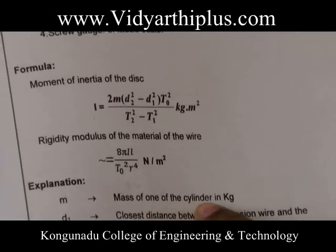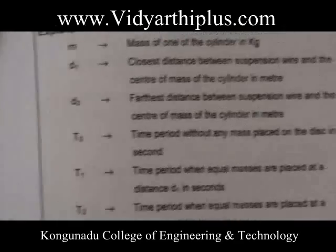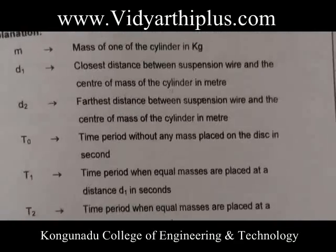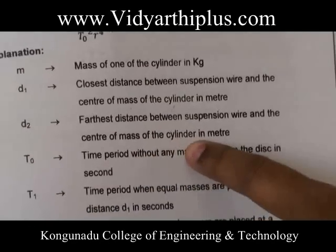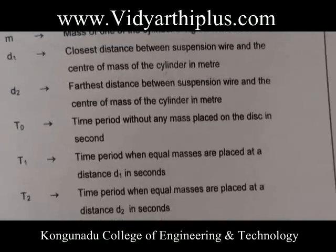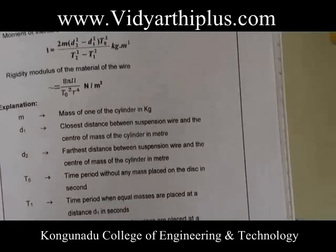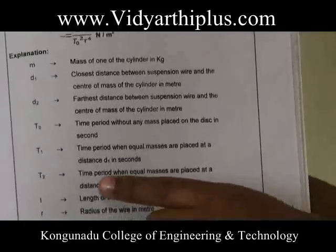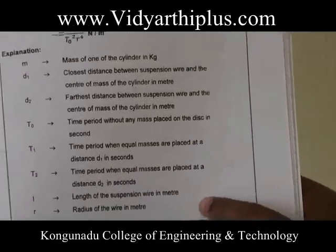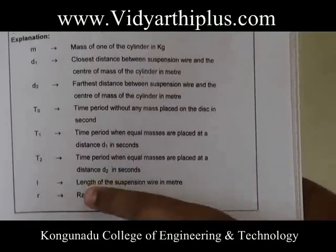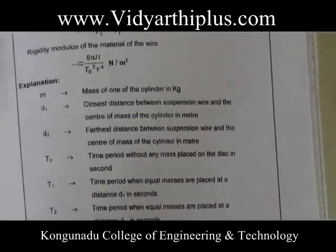Where M is the mass of one cylinder in kilograms; D1 is the closer distance between the suspension wire and the center of the cylinder in meters; D2 is the farther distance between the suspension wire and the center of the cylinder in meters; T0 is the time period without any masses on the disk in seconds; T1 is the time period when each mass is at distance D1 in seconds; T2 is the time period when each mass is at distance D2 in seconds; L is the length of the suspension wire in meters; and R is the radius of the wire in meters.